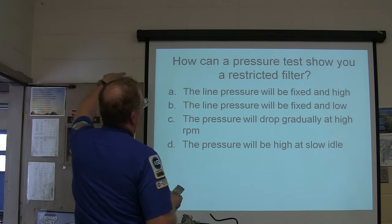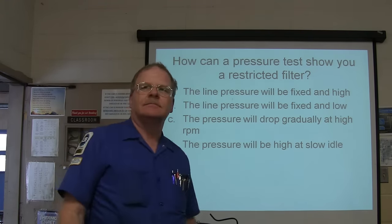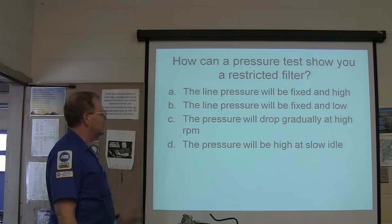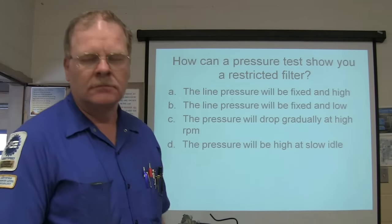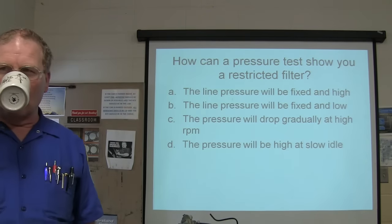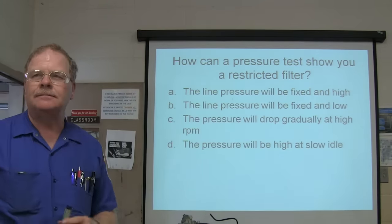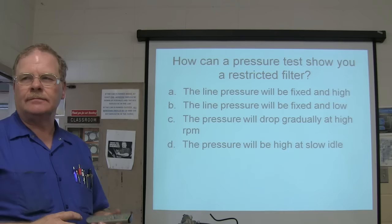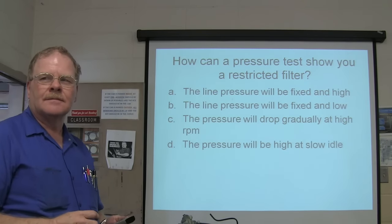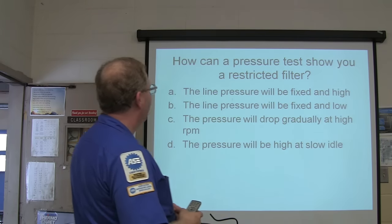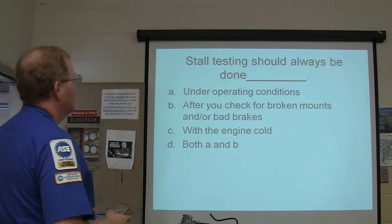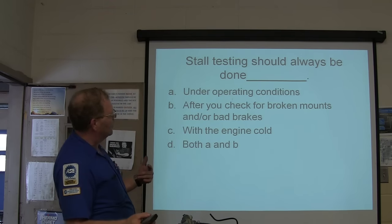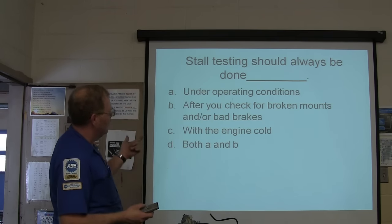How can a pressure test show you a restricted filter? The line pressure will be fixed at high, the line pressure will be fixed at low, the pressure will drop gradually at higher RPM, or the pressure will be high at slow idle. All testing should always be done under operating conditions, after you check for broken mounts and bad brakes, with the engine cold, or both A and B.